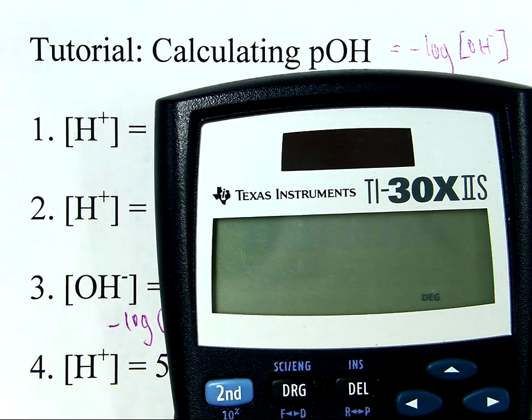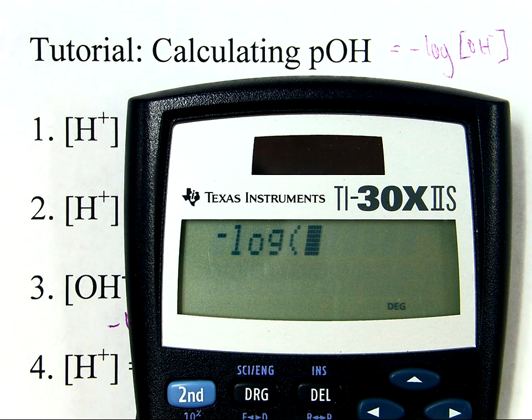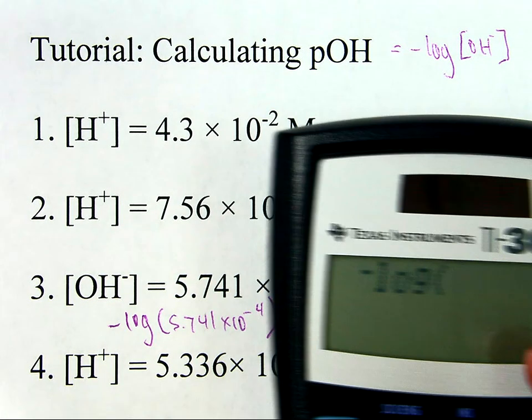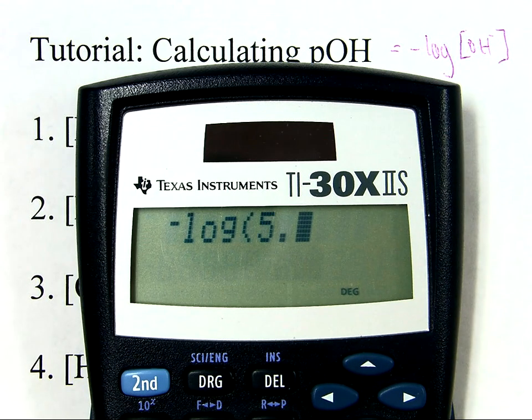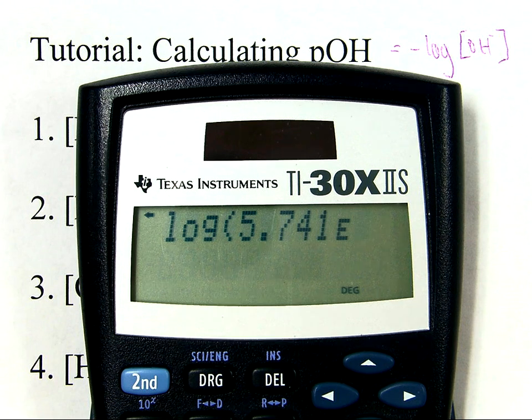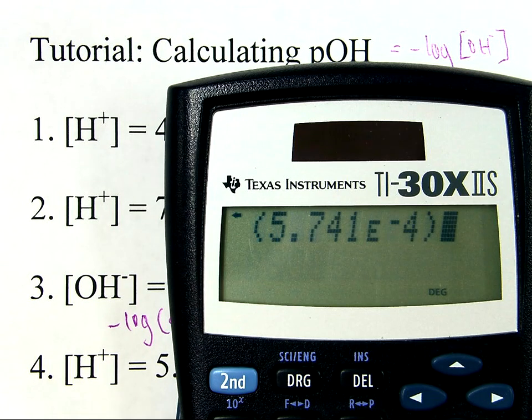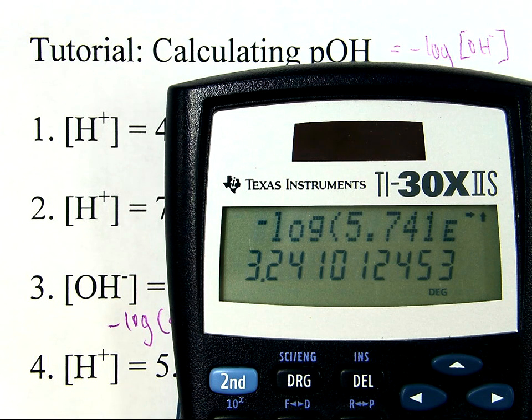And in doing that, let's see what that looks like. So, that's negative log, obviously what is that? 5.741 times 10 to the power of negative four. Close parentheses, the answer is that.